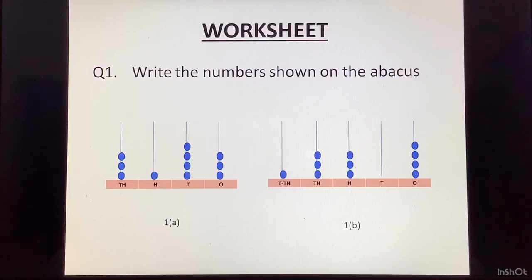Now, I want you to do a worksheet. Now, it is a small worksheet with just 5 questions. First question. Write the numbers shown on the Abacus. 1A. You can see the number. I will not tell you the answer. I want you to write it down. And 1B. Have a good look. Note down your answer.